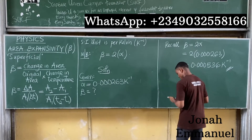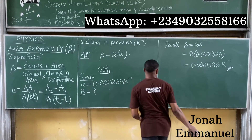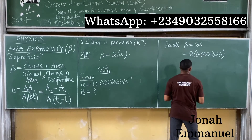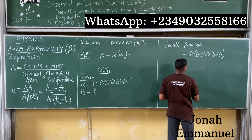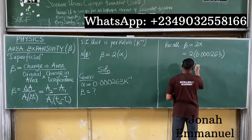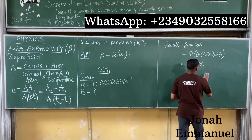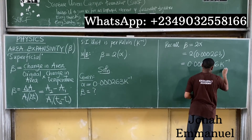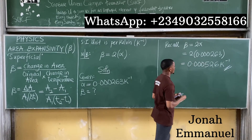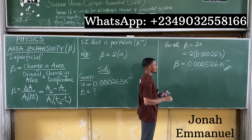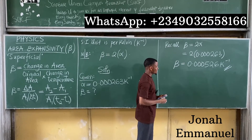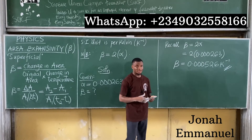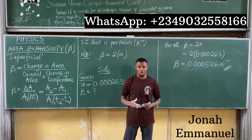Multiplying gives us beta equals 0.000526 per kelvin. So the superficial expansivity is 0.000526 per kelvin. This is how we solve this type of question.